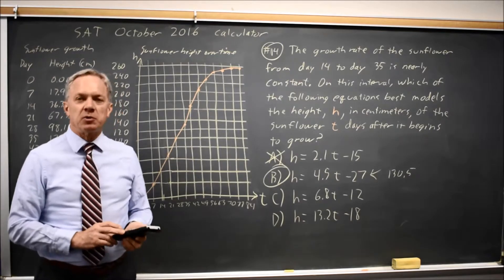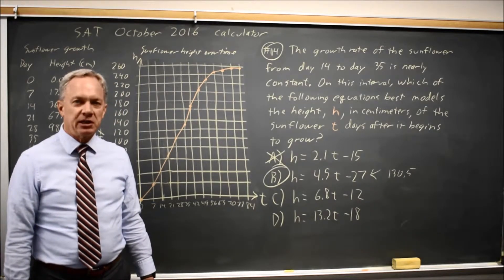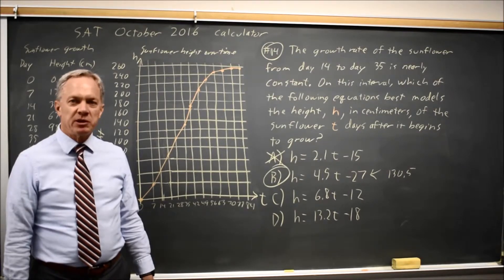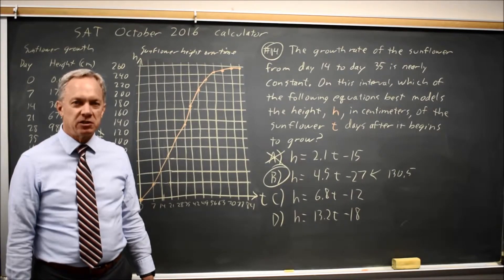So choice B is the only one that comes anywhere close to matching the heights in the table and the graph. So B would be my correct answer. B also matches the slope and is the only one close to matching the slope.